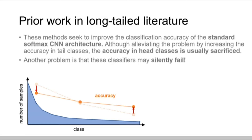These methods seek to improve the classification accuracy of the standard softmax-CNN architecture. Although they alleviate the problem by increasing the accuracy in tailed classes, the accuracy in head classes is usually sacrificed.